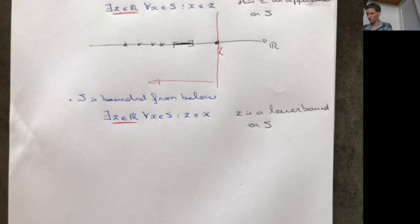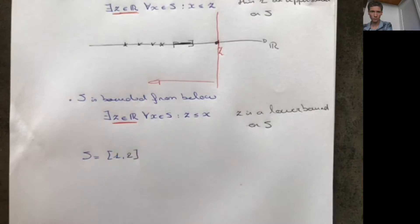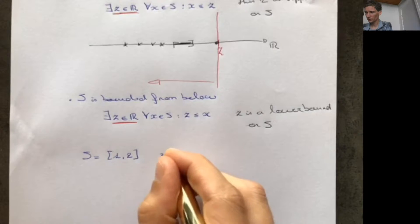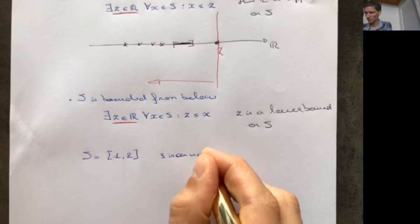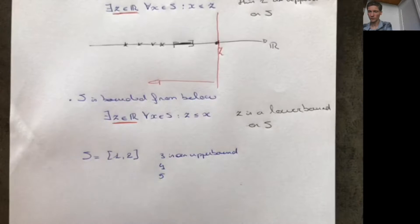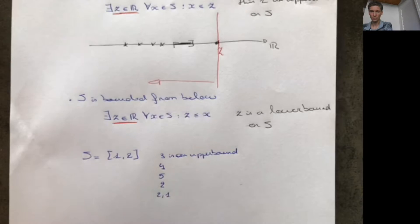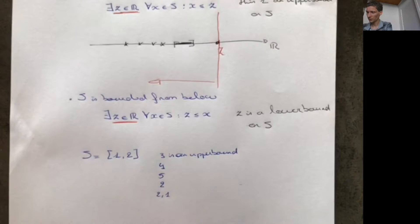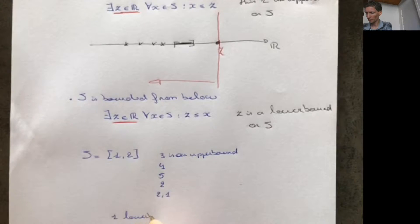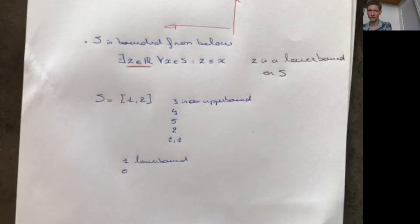Let me give an example. If S is equal to the interval [1, 2], then for example 3 is an upper bound, 4 is an upper bound, 5 is an upper bound. Also 2 is an upper bound — it's greater or equal to any element in this interval — and 2.1 is an upper bound and so on. So there are many upper bounds. Similarly, 1 is a lower bound, 0 is a lower bound, minus 1 is a lower bound — so you have also many lower bounds.